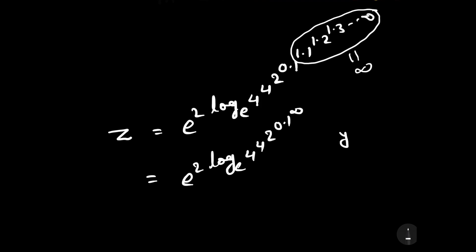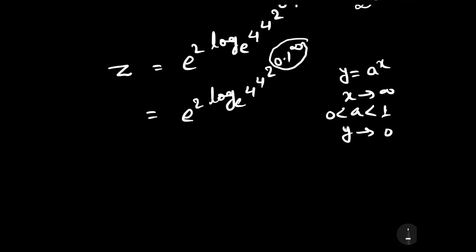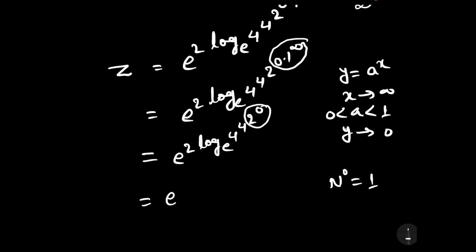We already established that y equals a to the power x, when x tends to infinity and a lies between 0 and 1, then y tends to 0. Therefore, 0.1 to the power infinity tends to 0. This means the expression becomes e to the power 2 log e base 4, to the power 4, to the power 2, to the power 0. Since any number to the power 0 equals 1, that power becomes 1.